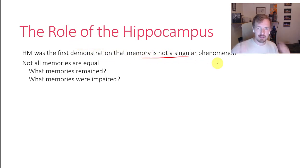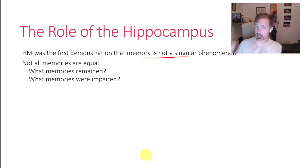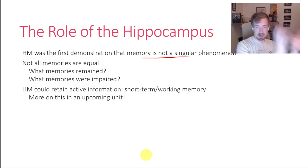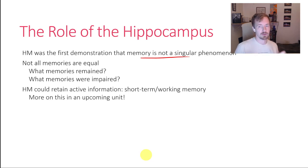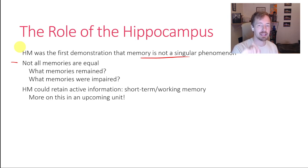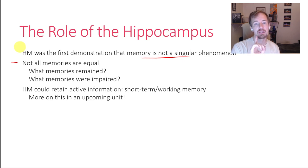HM is the first demonstration that memory is not just one singular thing — instead, there are subsystems. Explicit memory versus implicit memory. Just as explicit memory can be broken into episodic memory and declarative memory, implicit memory can be broken into procedural memory, perceptual memory, and things like that. Not all memories are created equal. Some remained even without the hippocampus. The hippocampus is very important for memory, but it really helps consolidate explicit memories — ones you can voluntarily and consciously recall and put into words.